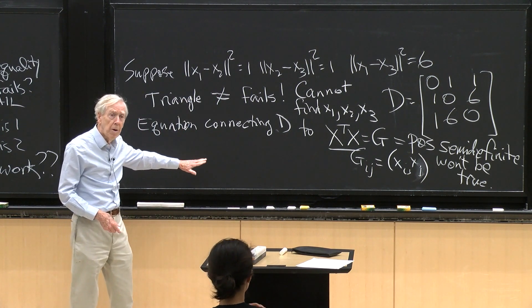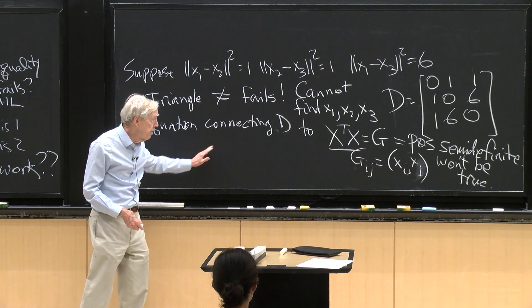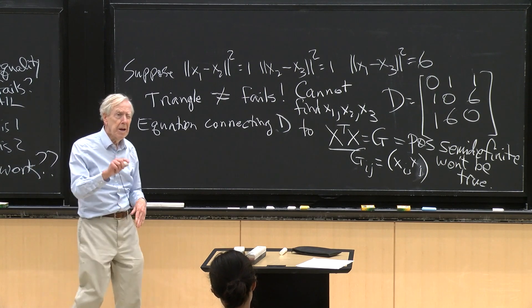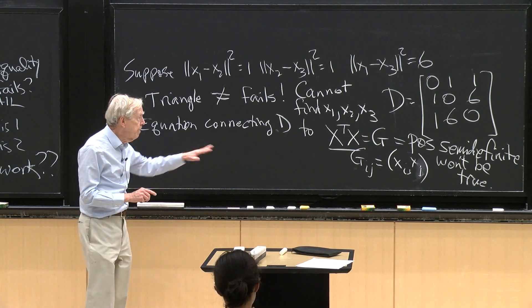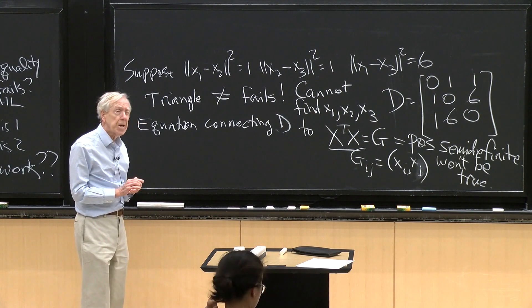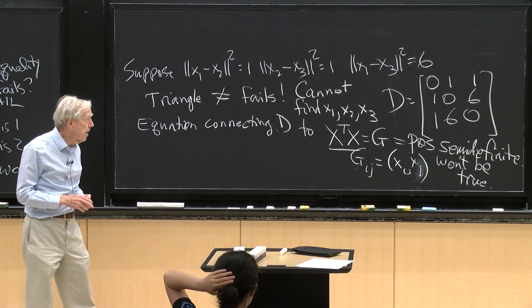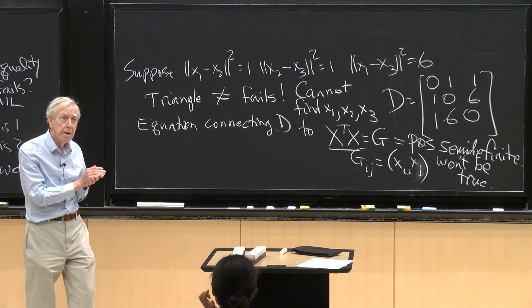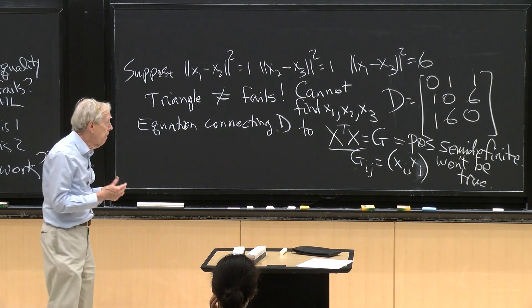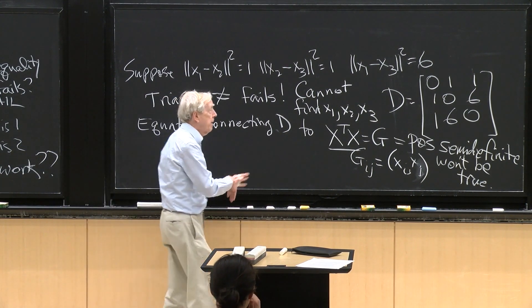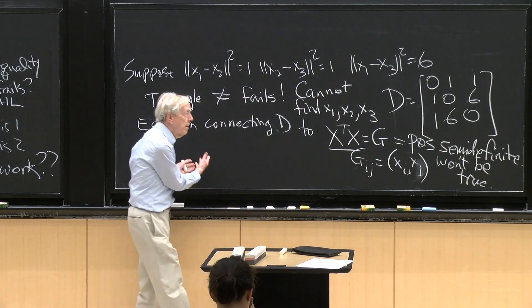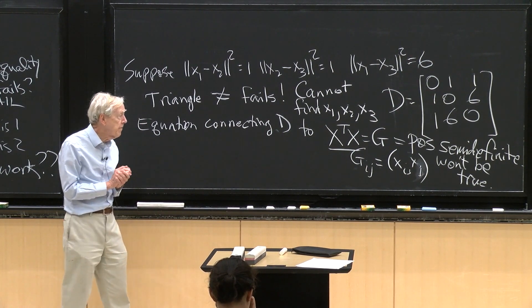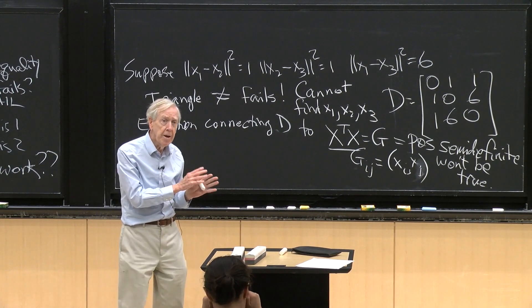That's really all I want to say, and I could push through the example. G will not come out positive definite if that's D, because it can't. If it came out positive definite, then we could find an x. So it's really quite nice. It's a beautiful little bit of mathematics that if and only if the triangle inequality is satisfied by these numbers, then the g matrix that comes out of this equation is positive semi-definite. If the triangle inequality is OK, we can find the points. If the triangle inequality is violated, like here, then the matrix g is not positive semi-definite, has negative eigenvalues, and we cannot find the points.